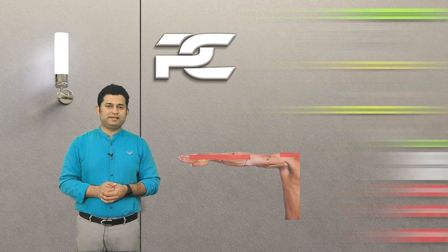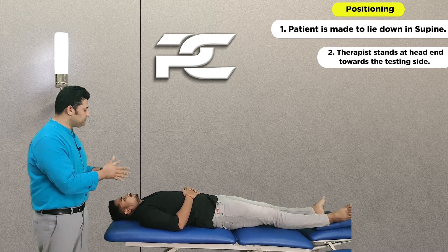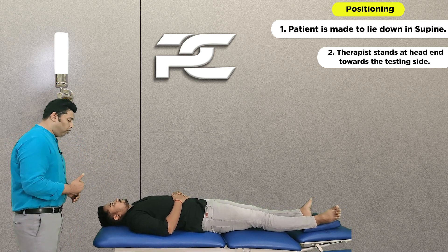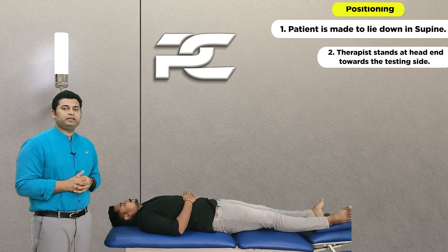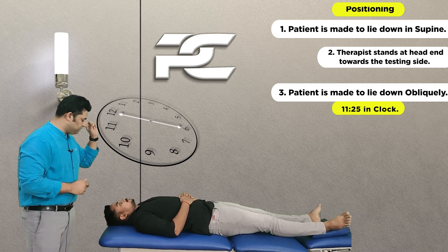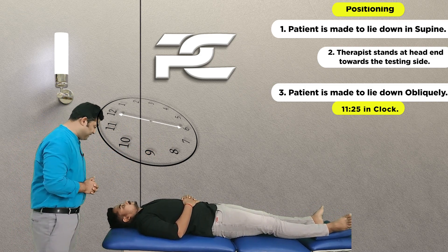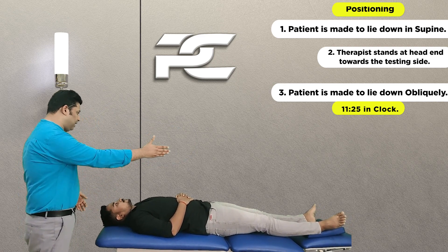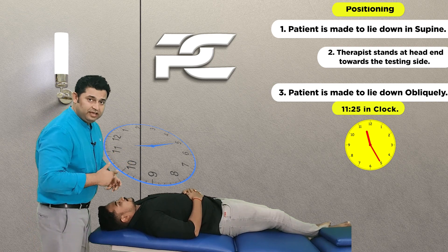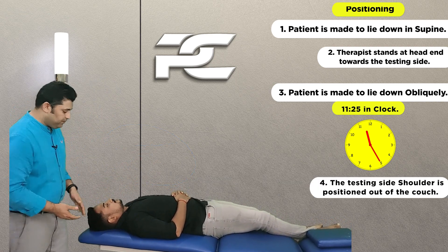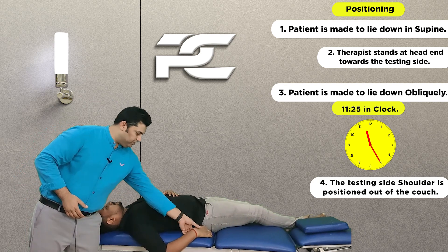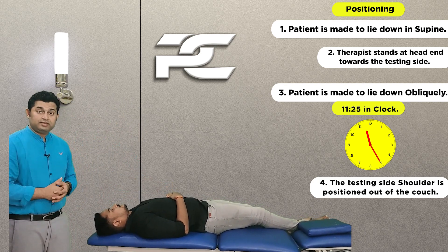To perform the radial nerve mobility testing, the therapist makes the patient lie down in the supine position and stands at the head end of the treatment table. The therapist explains to the patient: imagine a clock right above you, with your head pointing towards 12 and your legs towards 6. Lie down obliquely so that your legs are pointing towards 5 and your head towards 11. The shoulder being tested needs to come out off the edge of the couch — this is the starting position.